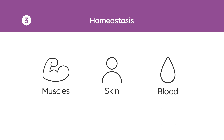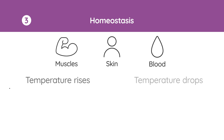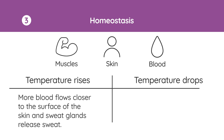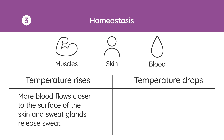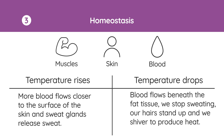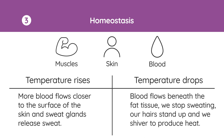The heat to maintain our body temperature at 37 degrees mainly comes from the liver during its metabolism. Muscles, skin and blood all play a role in controlling body temperature. If our temperature rises, more blood flows close to the surface of the skin and sweat glands release sweat, causing us to cool down. If our temperature drops, blood flows beneath the adipose or fat tissue, we stop sweating, our hairs stand up and we shiver to produce more heat.